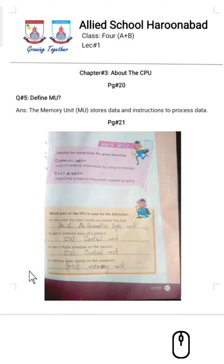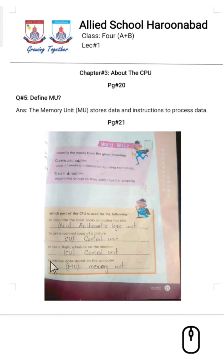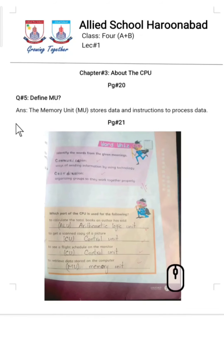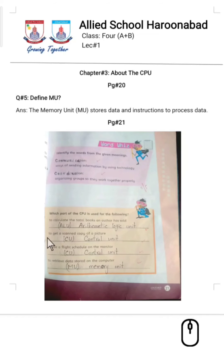That's all from today's lecture, students. Your diary for today is to learn question number 5 and page 21 of your book. Do the homework: write question number 5 in your computer notebook, and complete page 21 in your book with a lead pencil. Thank you.